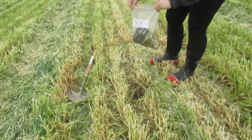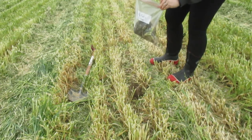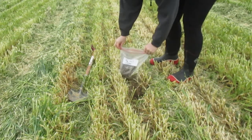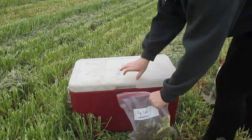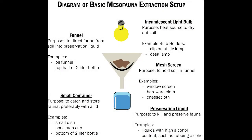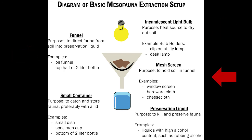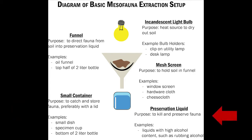After collecting your soil samples, it's important to begin extracting the mesofauna shortly after — preferably start the extraction on the same day, or the day after if necessary. Keep your soil samples in a cooler with ice packs until you're ready to start the extraction process. Mesofauna are collected using a Berlese funnel extraction. This type of extraction relies on a heat source warming and drying the soil to get the live mesofauna to move out of the soil into a collection container below. The basic components needed are an incandescent light bulb, a funnel, mesh to hold the soil, a container to catch the mesofauna, and a preserving liquid.